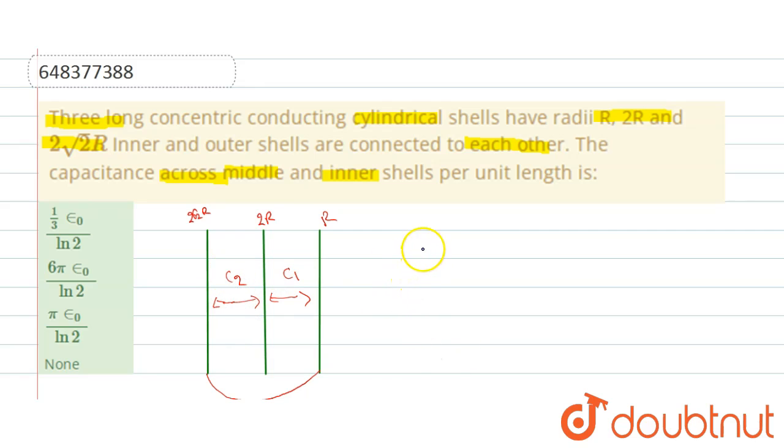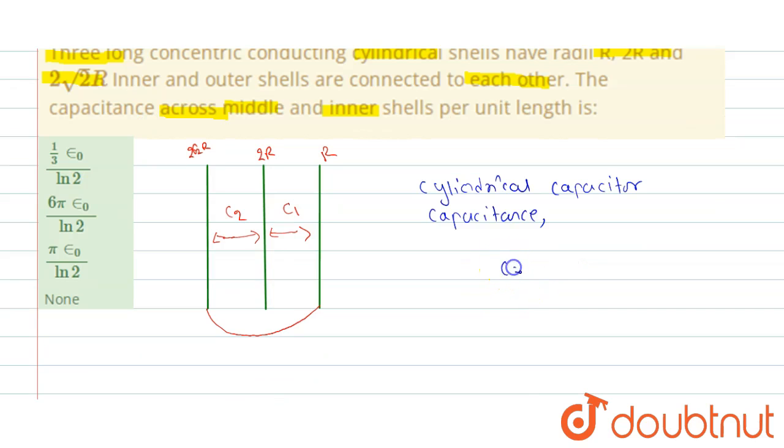Now we know capacitance for cylindrical capacitor. Capacitance formula is C equals 2π ε₀ divided by ln of outer radius r2 divided by inner radius r1 and this capacitance is per unit length.